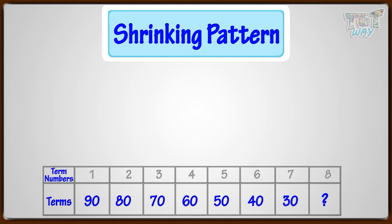Now let's find out what the next terms for this pattern is. Here we are subtracting 10 with every term. 90 minus 10 we get 80, 80 minus 10 we get 70, 70 minus 10 we get 60, and so on.